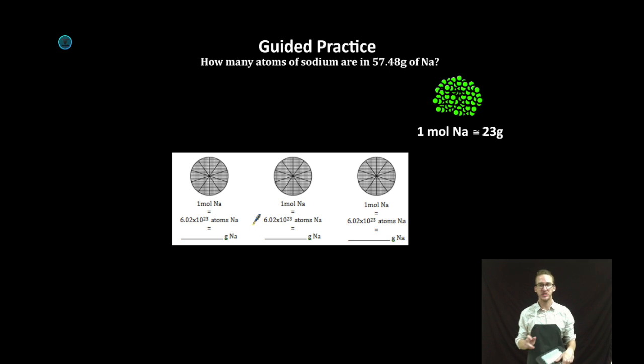Hey what's up everybody it is Mr. Boylan back for some more fun. This time we want to know how many atoms of sodium are in 57.48 grams of sodium.